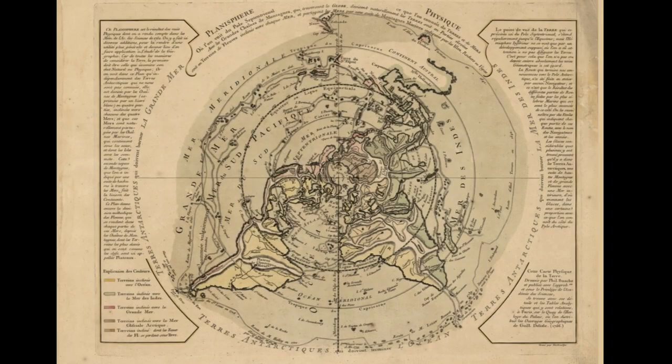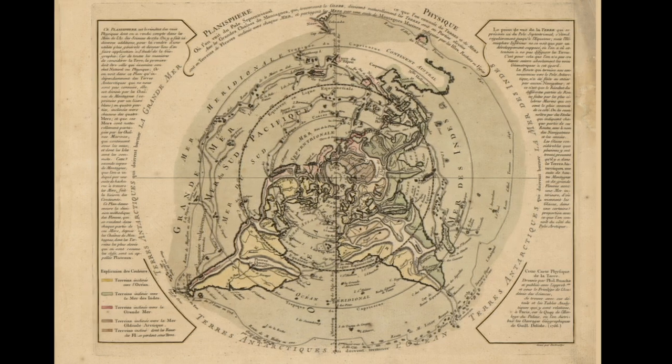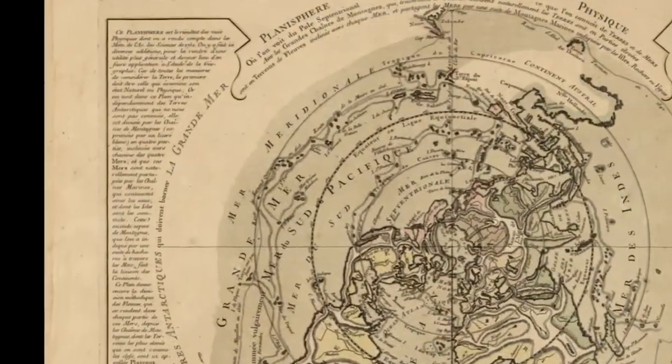This is a very old azimuthal equidistant flat earth map made from 1762 to 1766 from the Academy of Sciences in France. You'll see that there are several routes marked on here by ancient French explorers of various states that are quite old. And as you can see, this map is originally written in French.